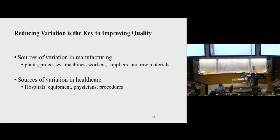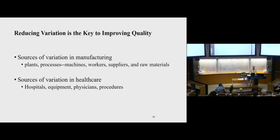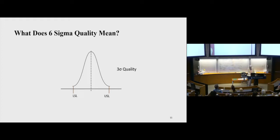So the idea of quality is that reducing variation is the main idea. And there are sources of variation in manufacturing: plants, processes, machines, workers, suppliers, raw materials. And there are sources of variation in healthcare: hospitals, equipment, physicians, and the different procedures. So the idea is you want to reduce variation. Now, Six Sigma is an important word that people hear about all the time. Six Sigma quality problems, and you think about what Six Sigma means. Let me explain what Six Sigma quality means. It's really parts per million. It's really producing a defect level that's really, really small.